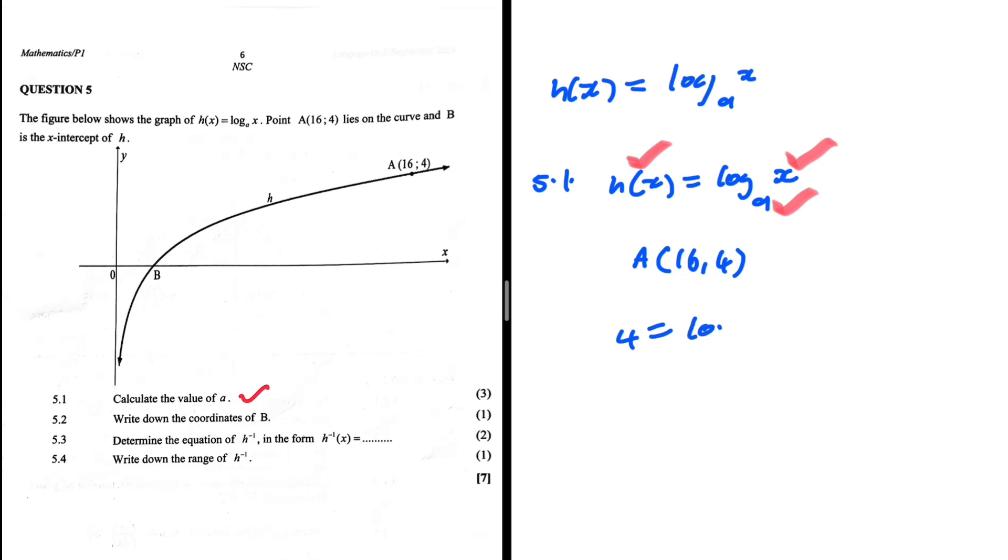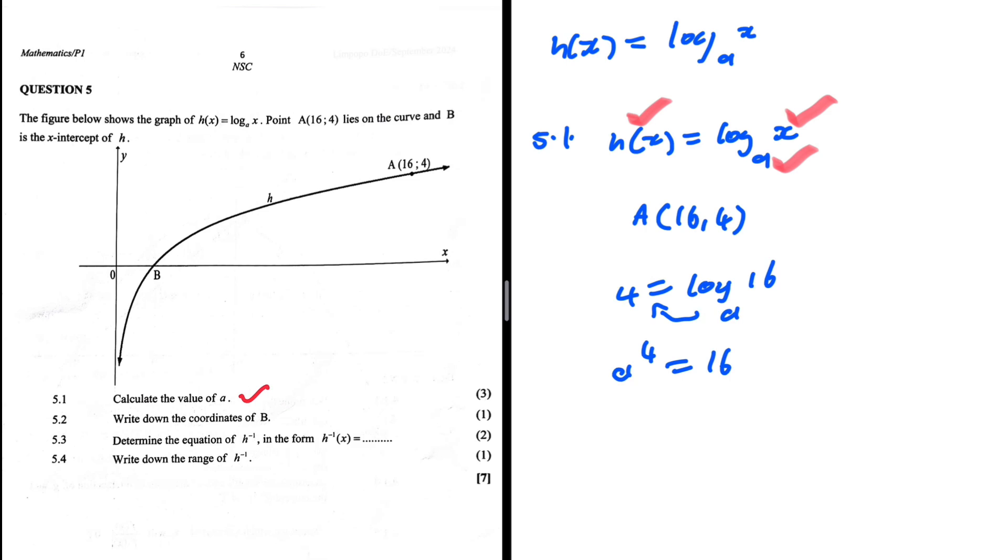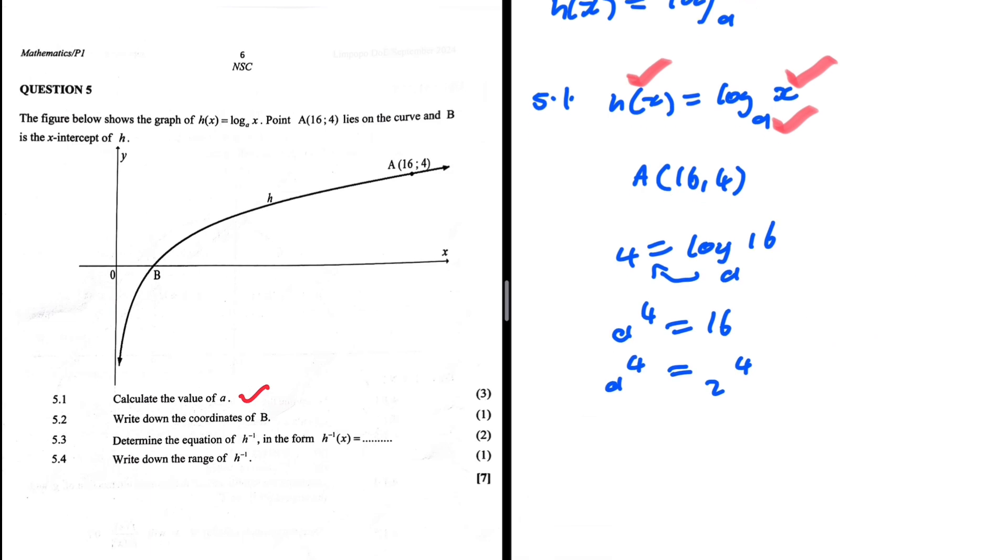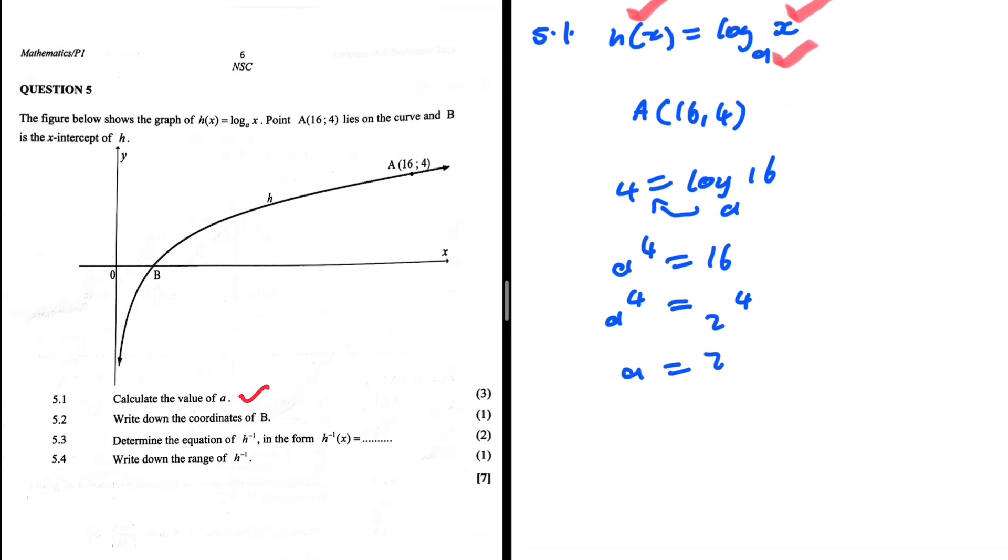Y is 4, log base a of x is 16. Applying log laws, we get a^4 = 16. It's advantageous to write 16 with the numerator of 4, so we can drop the exponents and equate the bases. a^4 = 2^4, since 2×2 = 4 and 4×4 = 16. When we drop the exponents, we end up with a = 2. That's our answer.